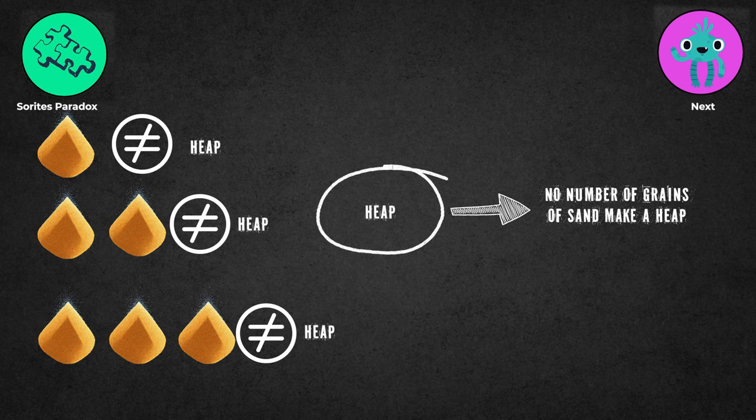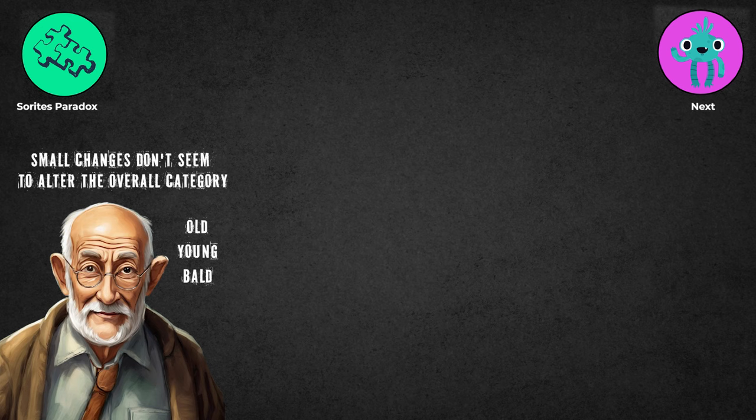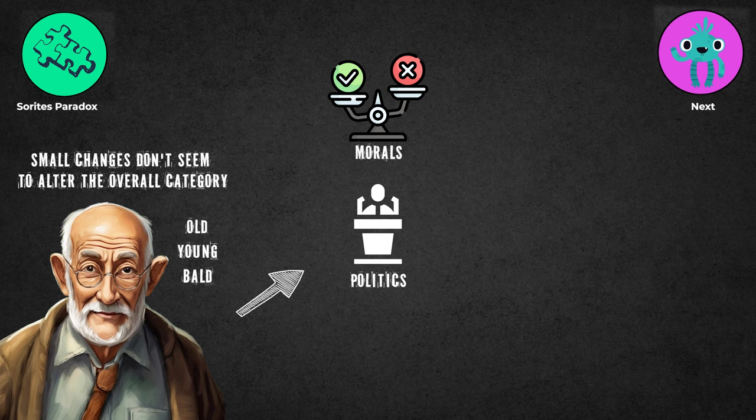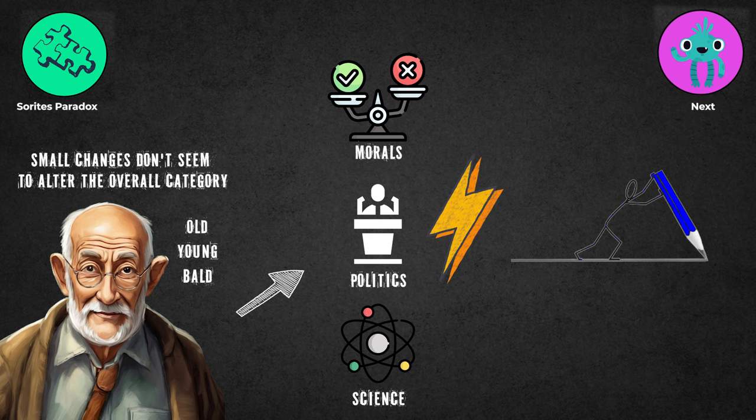This paradox highlights the ambiguity in concepts like old, young, or bald, where small changes don't seem to alter the overall category. This applies to many areas like morals, politics, and science. This paradox challenges us to think about where to draw the line in various situations, even beyond tangible objects.